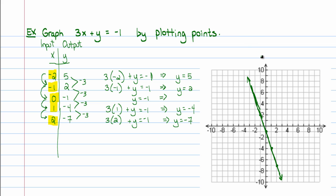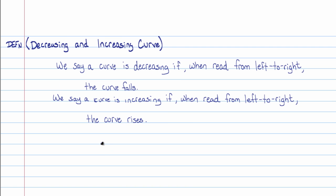This brings up a couple pieces of information I want to discuss. We've talked about the Cartesian coordinate system and how to graph linear equations by plotting points. But we also need to describe the fact that this line is decreasing from left to right — it's falling down from left to right — and we call this a decreasing curve. A curve is decreasing if, when we read it from left to right, the curve falls. It's increasing if, when reading from left to right, the curve rises.